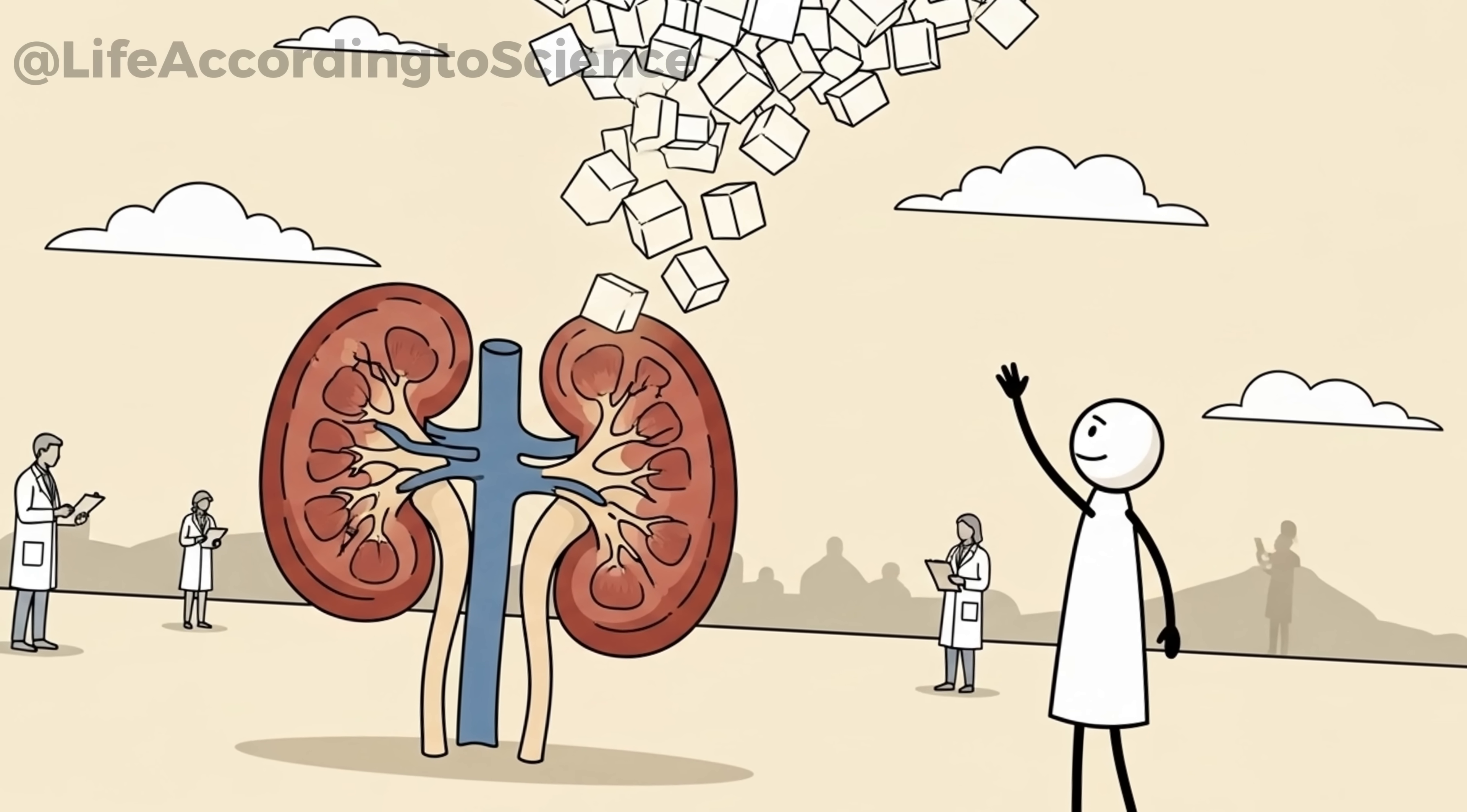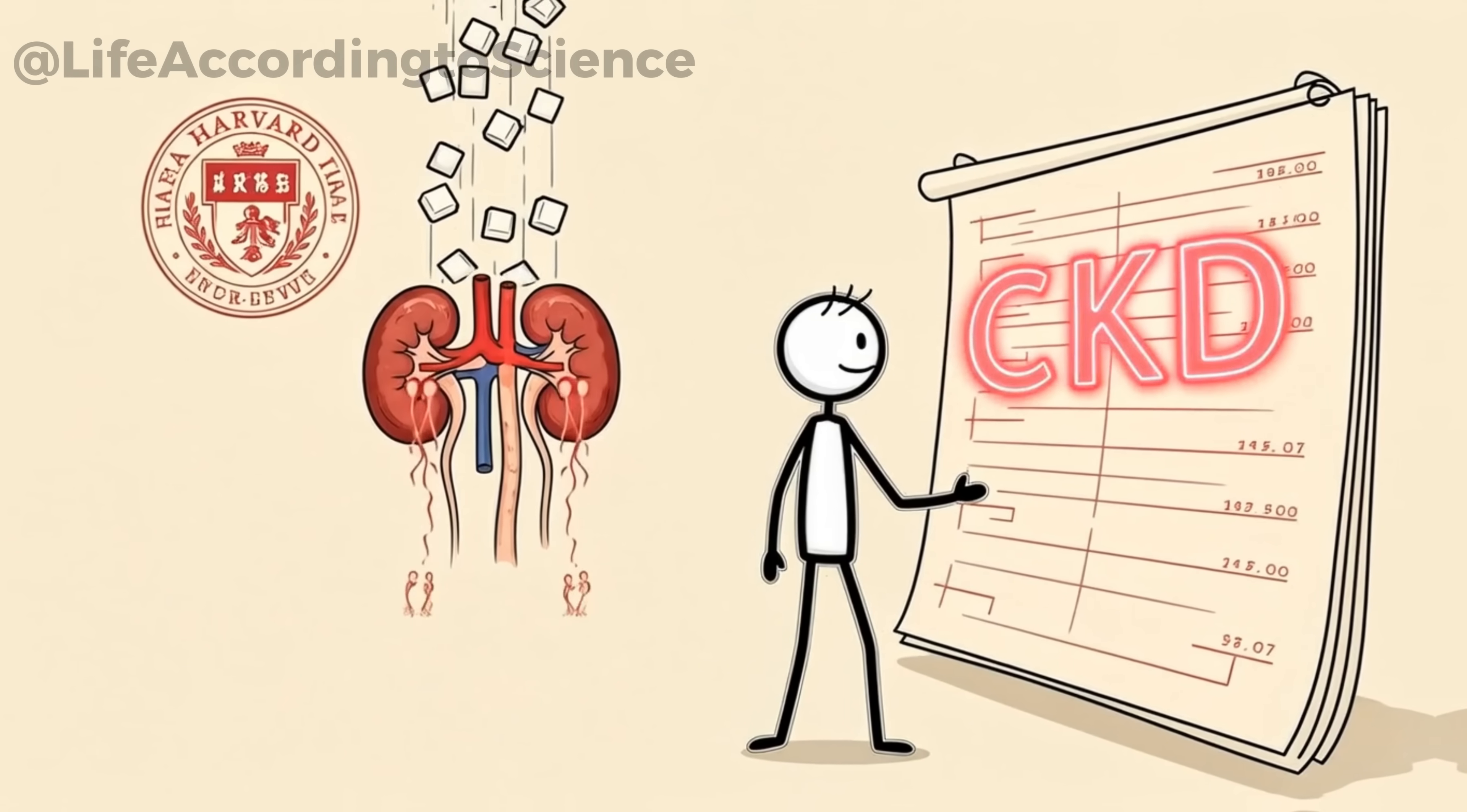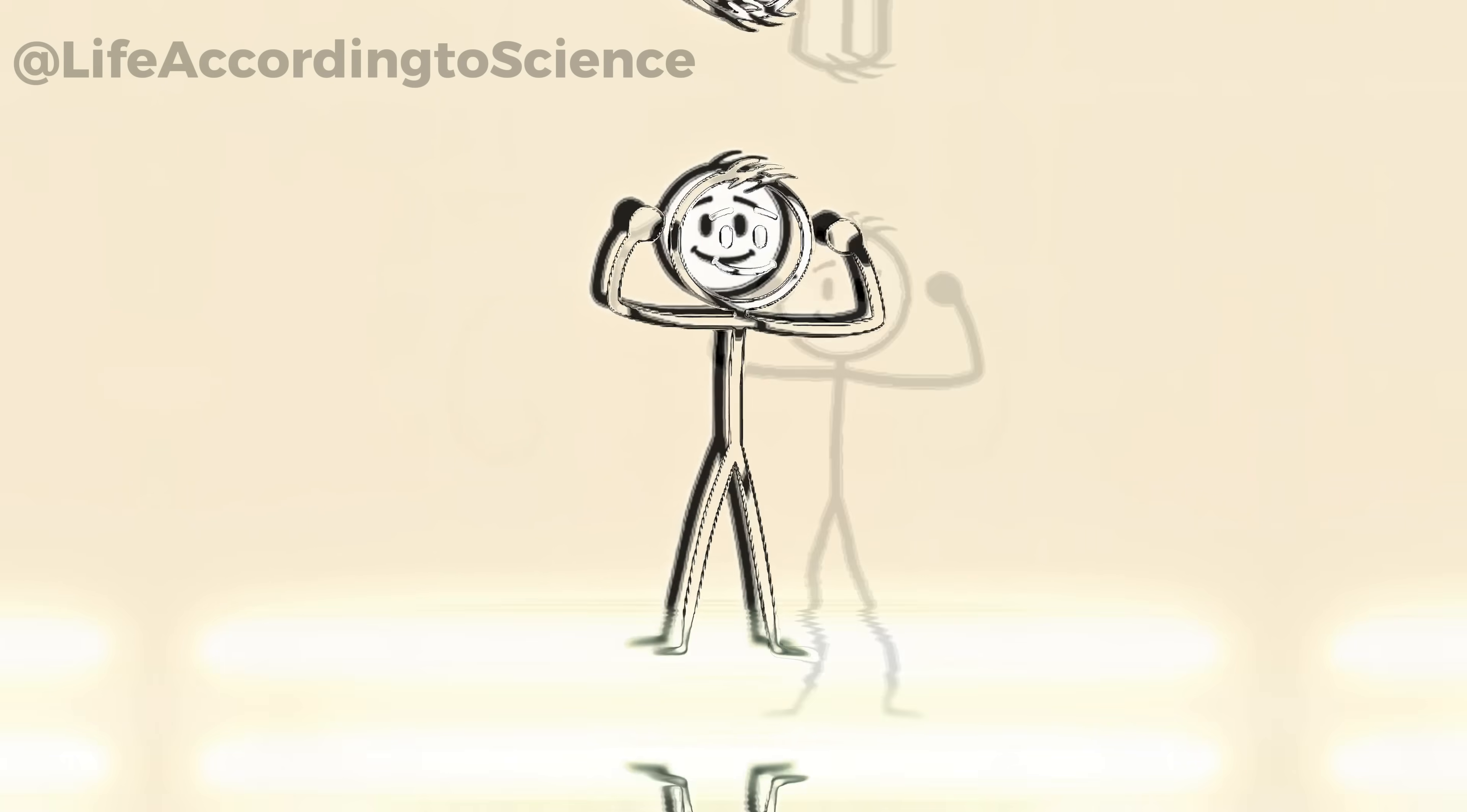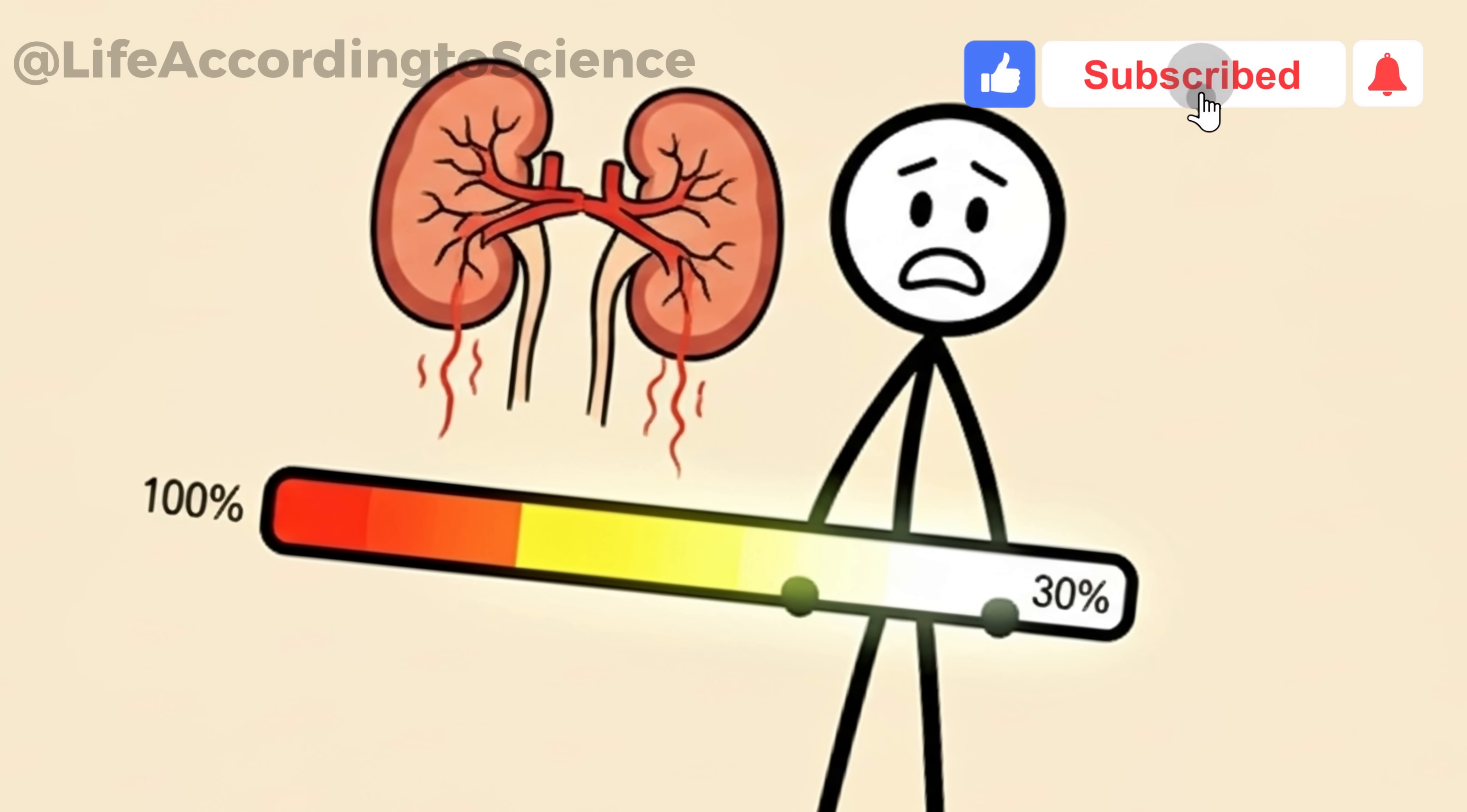Researchers from Harvard found that people who regularly consume high amounts of added sugar are at a significantly greater risk of chronic kidney disease (CKD). Even if you're young and feel healthy, the silent accumulation of sugar damage can start decades earlier than symptoms appear. The frightening truth? Many people discover kidney issues only after 70% of function is already gone. Cutting sugar now is like choosing prevention over regret.